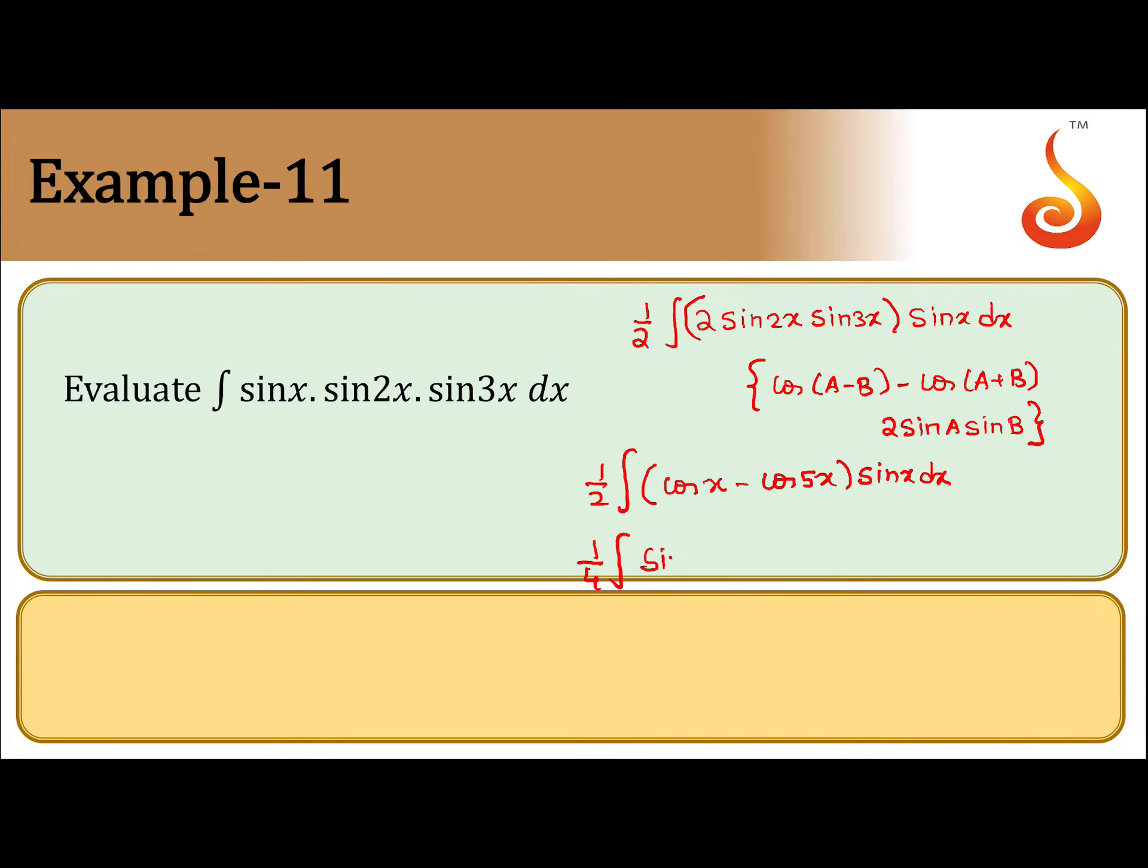Again we write the formula. We get 1/4 integral sin 2x minus... 2 sin A cos B or 2 cos A sin B can be written as sin(A + B).